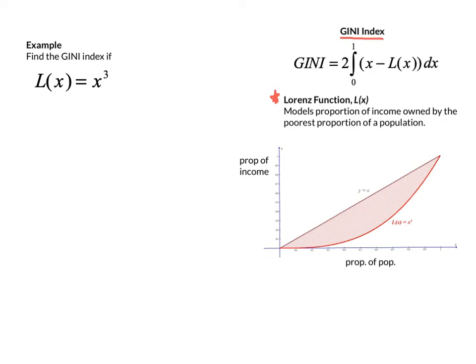And because of that, the L of x function always has to have 2 points on it: 0, 0, because no people own 0 of the income, and 1, 1, because all of the people own all of the income in the country.